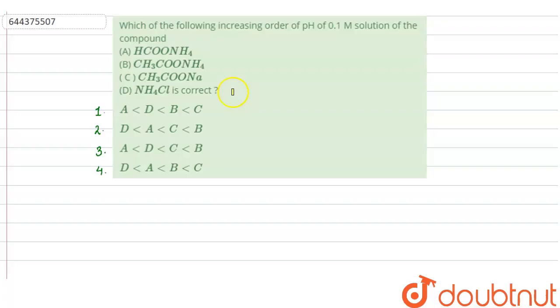Hello everyone, let us solve this question. The question says that which of the following increasing order of pH of 0.1 molar solution of the compound H2COONH4, CH3COONH4, CH3COONa, and NH4Cl is correct? In this question, four options are given. We have to select the correct increasing order of the pH of the 0.1 molar solution of these compounds. Basically concentration here is same, so we will find out the nature of these salts which are given.